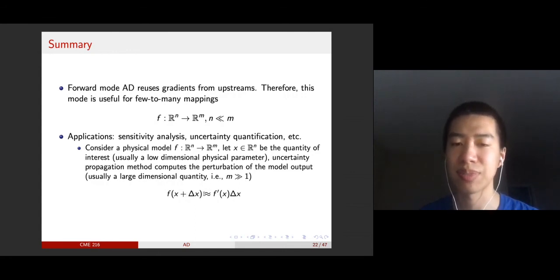If you expand this using the Taylor expansion—here's a typo, it should be f(x) here—f(x) + f'(x)·Δx. You want to compute this gradient. This gradient is a few-to-many mapping, and forward mode automatic differentiation is very useful for this case.